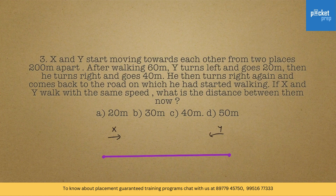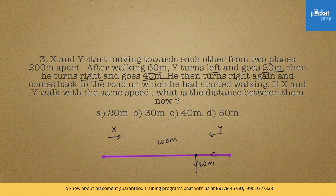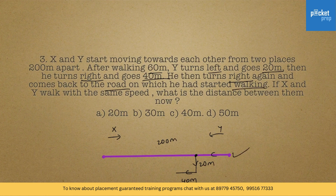X and Y are moving towards each other from two different places which are 200 meters apart. After walking 60 meters, Y turns left and goes 20 meters in this direction. After that he turns right and goes 40 meters in this direction. He then turns right again and comes back to the road on which he had started walking. This is the road and he comes back to it. Since the left detour was 20 meters, this return segment is also 20 meters.